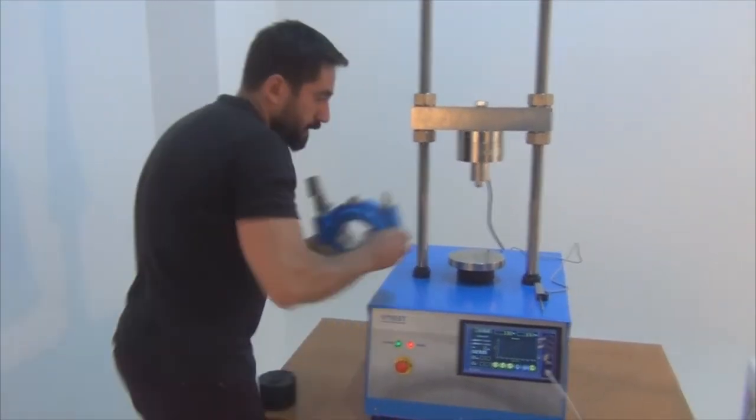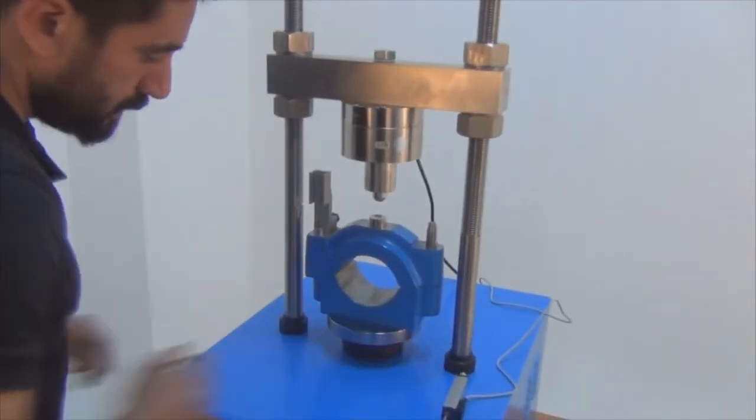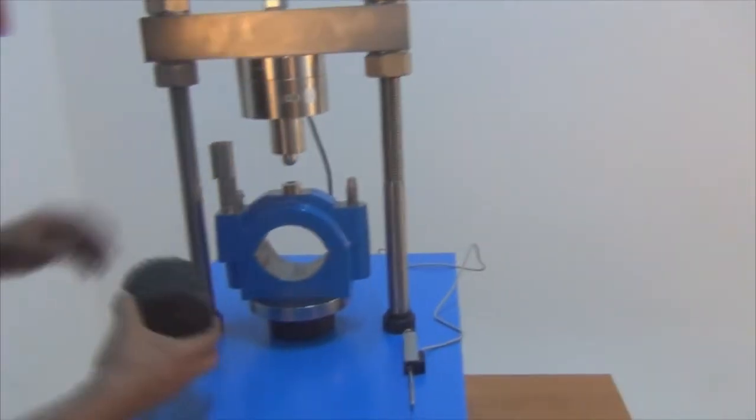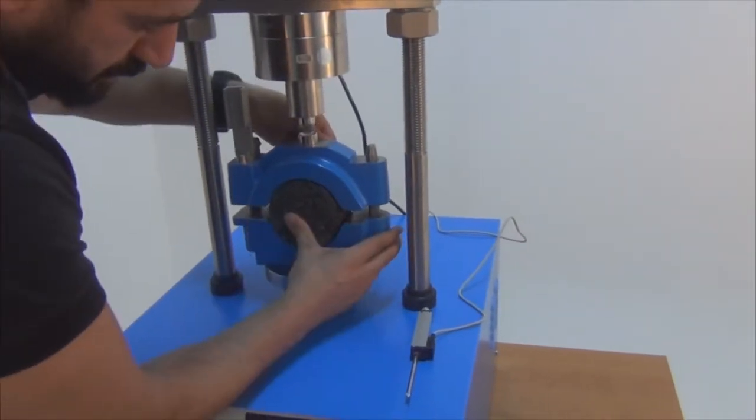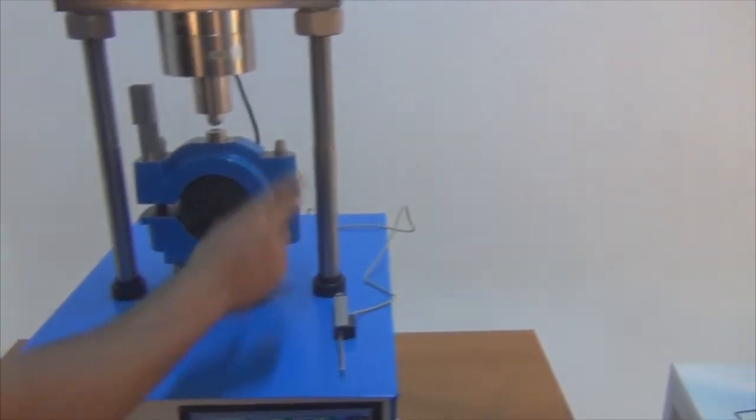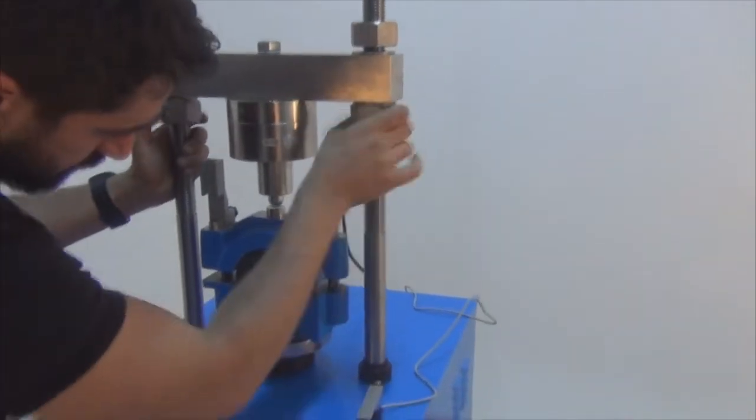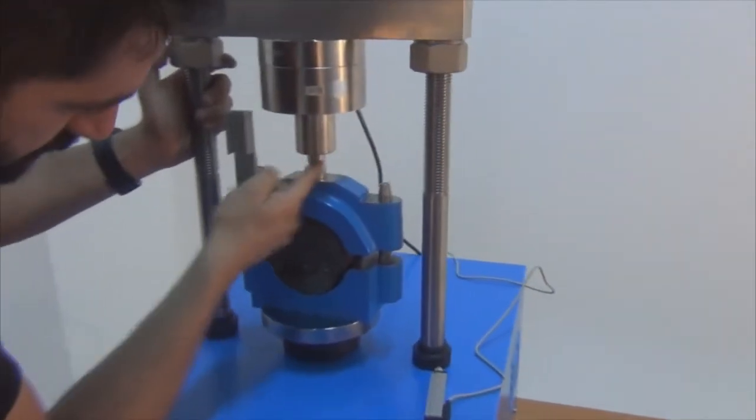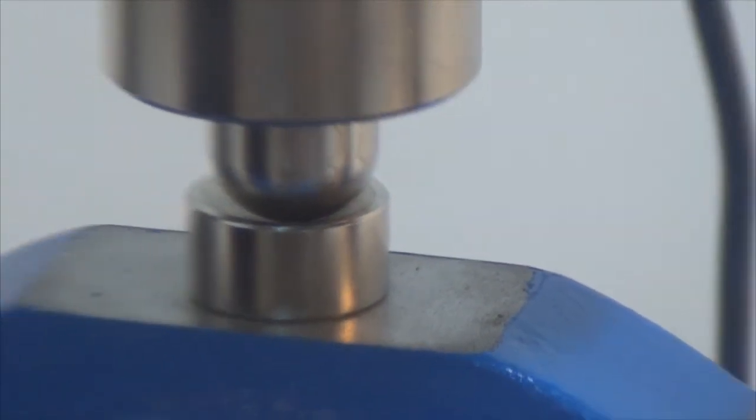First, we are going to place this breaking head upon the pedestal and then place the Marshall specimen. Then we are going to arrange this distance so that the piston is just in contact with the mold and breaking head.